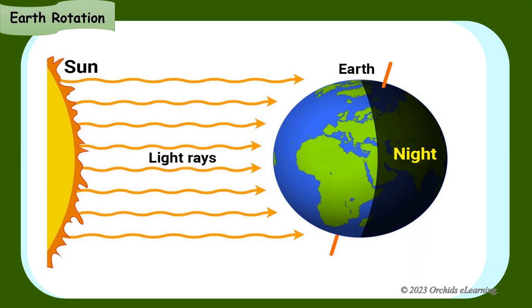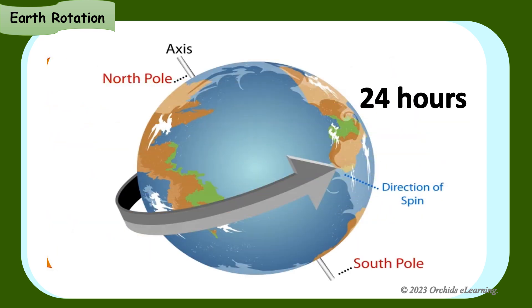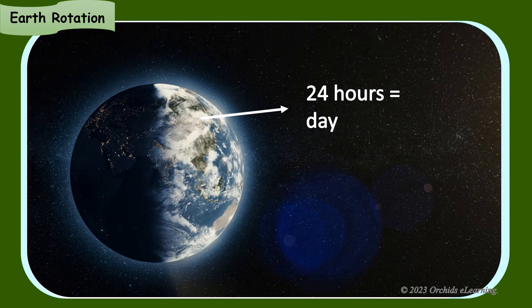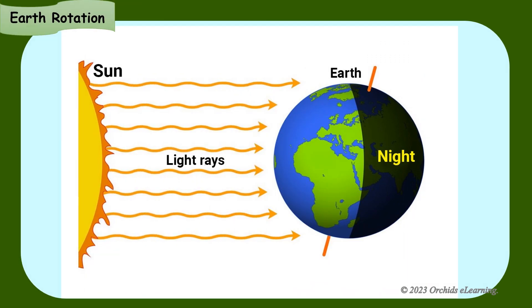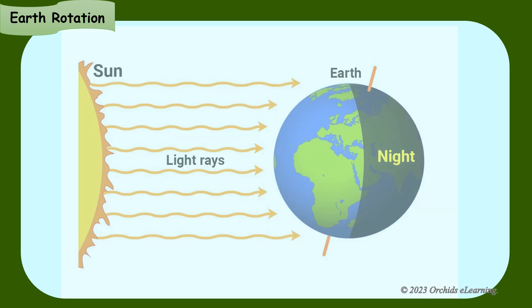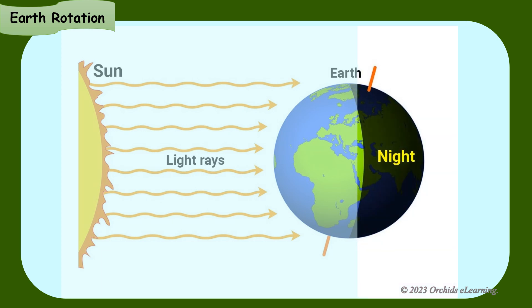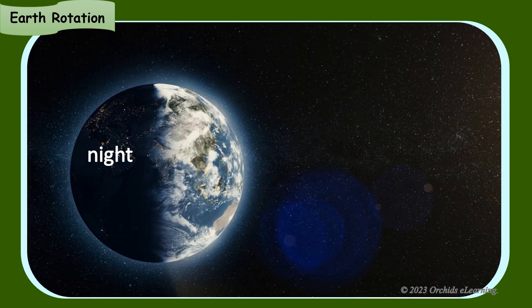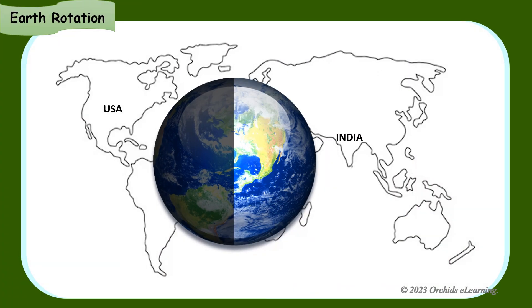The rotation of the Earth causes day and night. The Earth takes nearly 24 hours to rotate once on its axis. 24 hours make a day. When the Earth rotates on its axis, one half of the Earth faces the Sun, so it is daytime on that half of the Earth. At the same time, the other half of the Earth is away from the Sun, so it is nighttime on that half of the Earth. This is the reason why it is nighttime in America when it is daytime here in India.